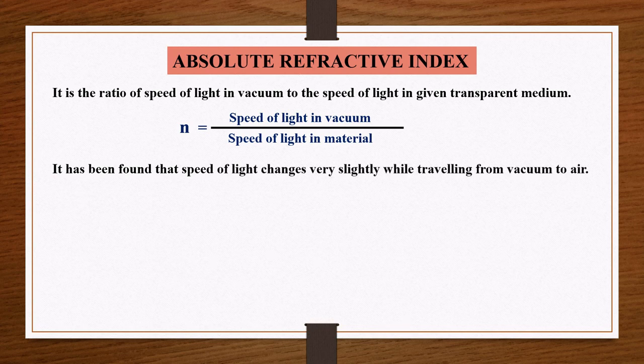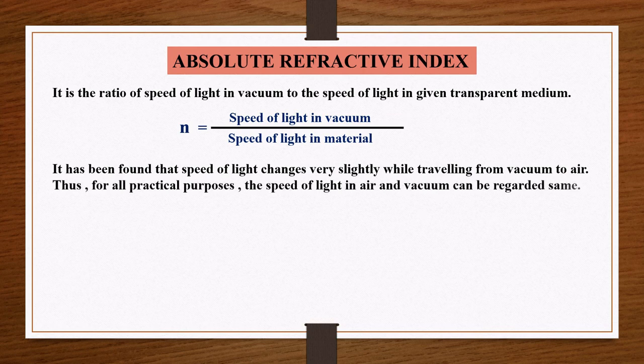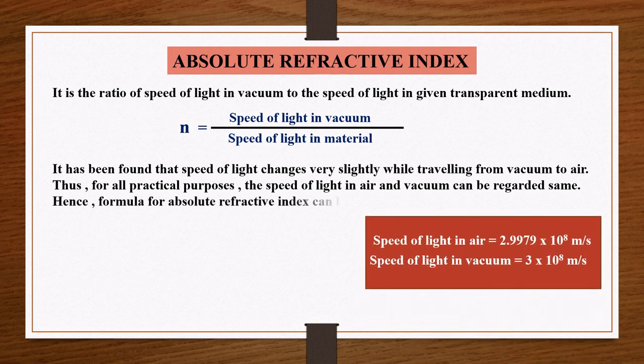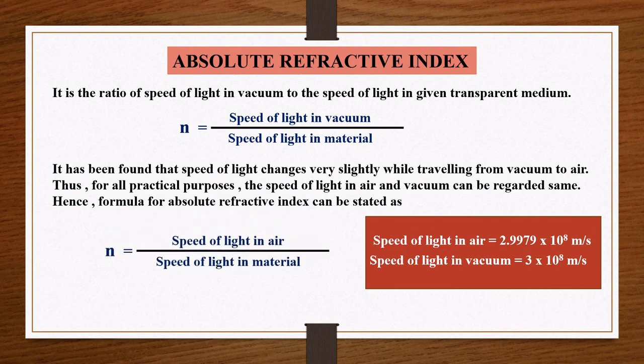It has been found that the speed of light changes very slightly while traveling from vacuum to air. Thus for all practical purposes the speed of light in air and vacuum can be regarded as the same. Hence the formula for absolute refractive index can be stated as n equals speed of light in air divided by speed of light in the material.